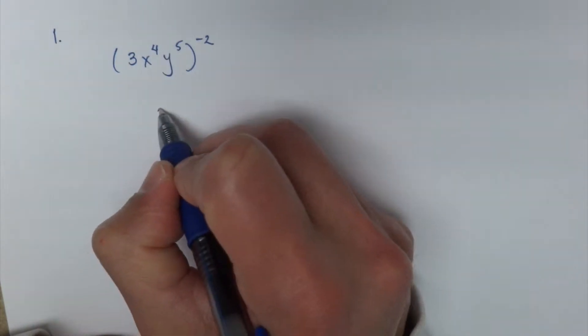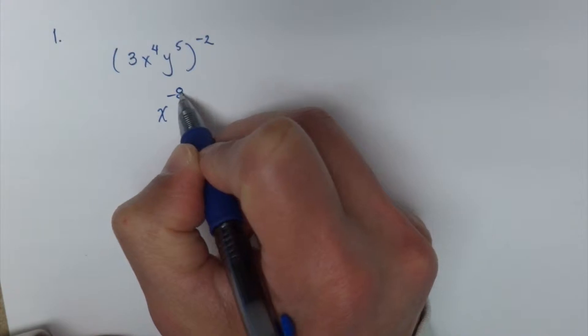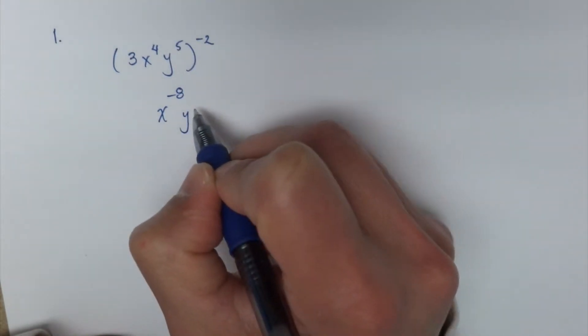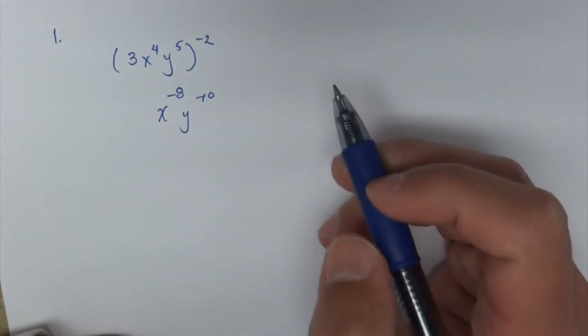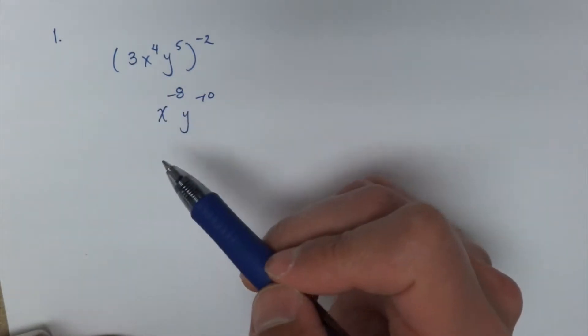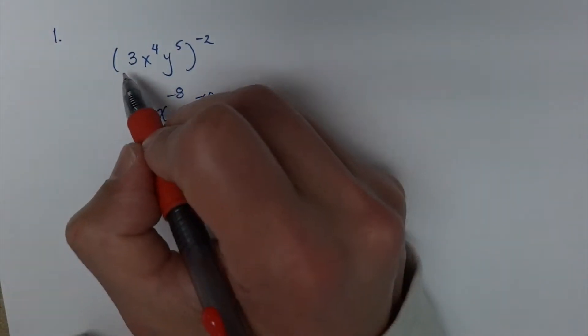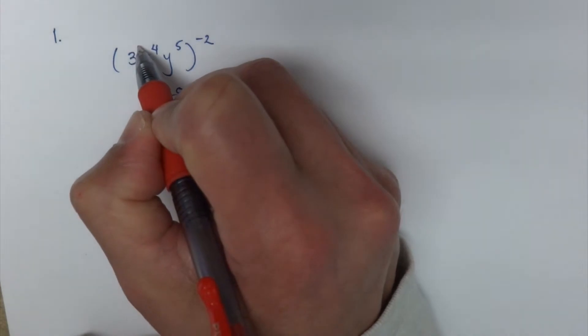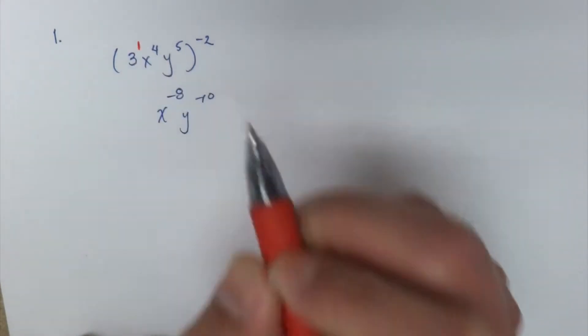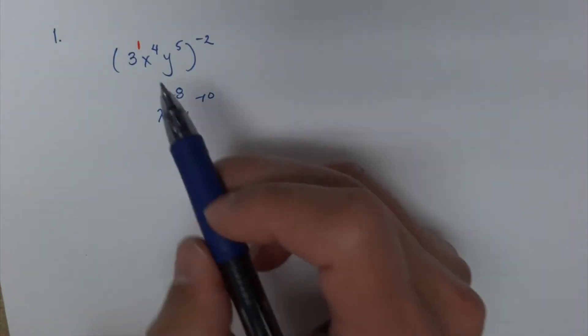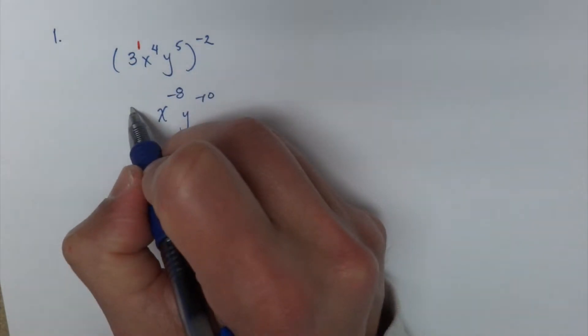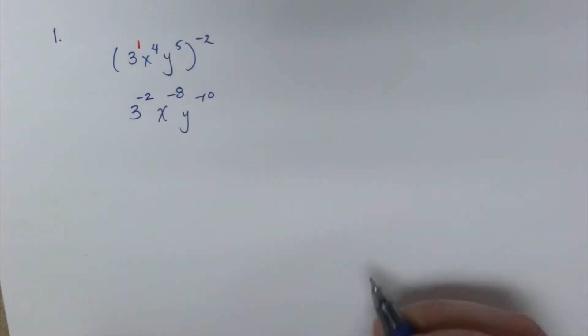So the fourth power becomes x to the negative 8 and 5 times negative 2 is negative 10. Now what about the 3? There's a couple of ways you can think about it, but pretend that the 3 has a power of 1. So now 1 times negative 2 becomes 3 to the negative 2 power.